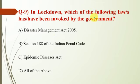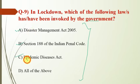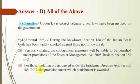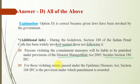Question number 9: During the lockdown, which laws were invoked by the government? The government invoked the Disaster Management Act 2005, Section 188 of the Indian Penal Code, and the Epidemic Diseases Act — so option B, all of the above. Section 188 IPC has been widely invoked against those not following lockdown orders. Persons violating containment measures are liable under the Disaster Management Act 2005 and Section 188 IPC. For violations of the Epidemic Diseases Act, Section 188 IPC is the provision under which punishment is awarded.